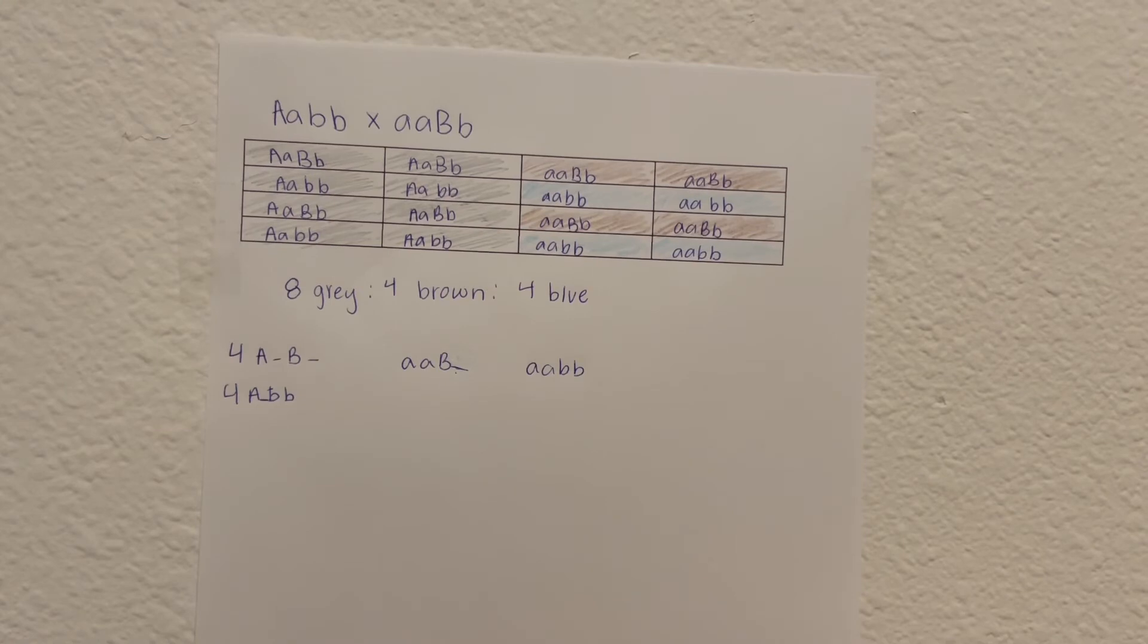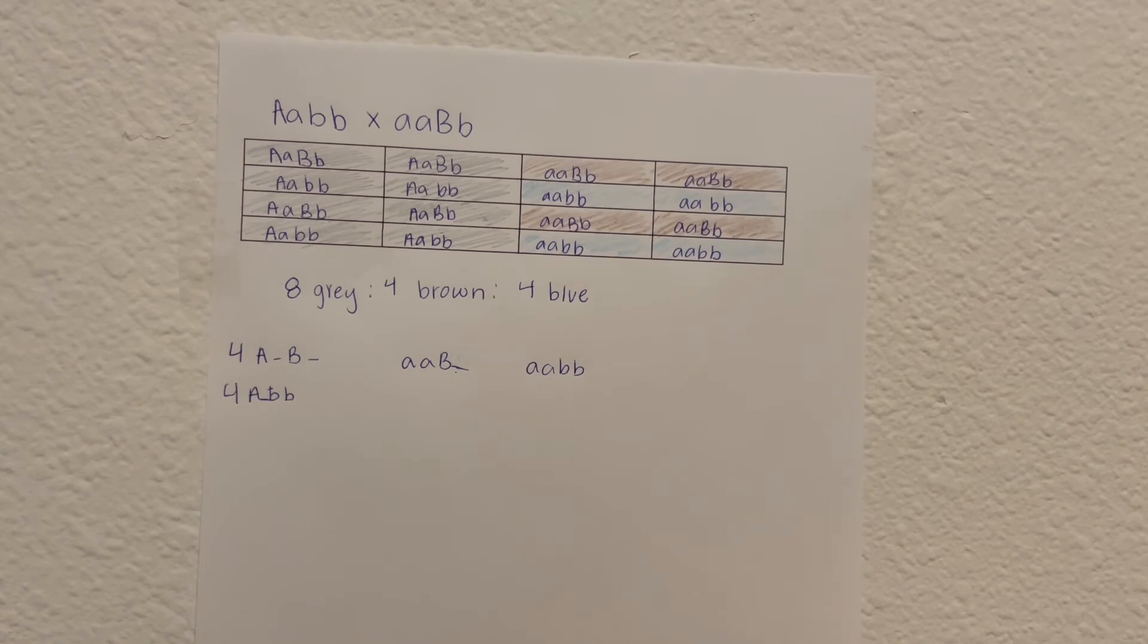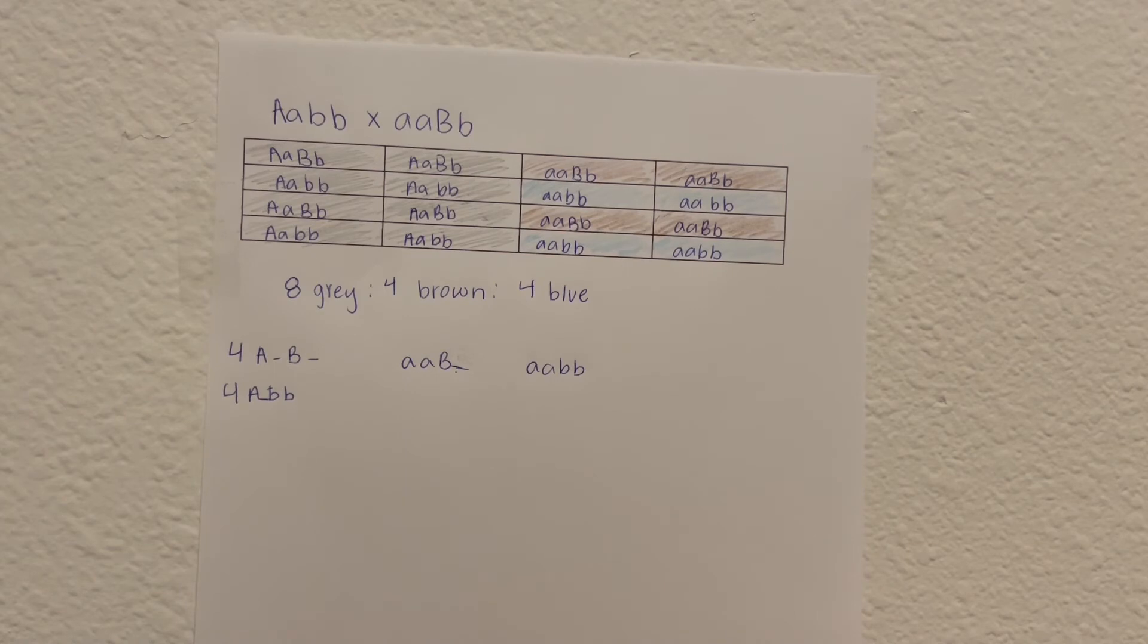Another example for single dominant epistasis with a Punnett square would be crossing capital A lowercase a with two lowercase b's, and two lowercase a's with a capital B and a lowercase b.